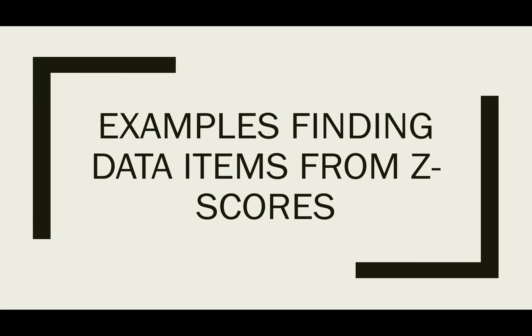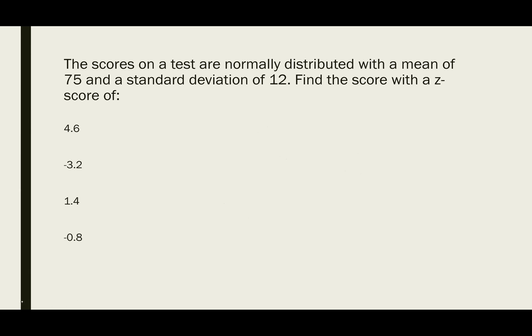In these examples, we're going to find data items for given z-scores. When finding data items for given z-scores, you want to remember that the z-score describes how many standard deviations above or below the mean your data item is.